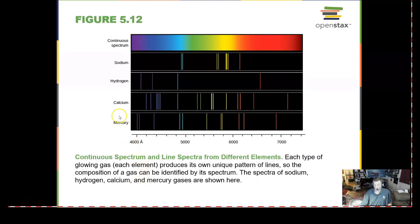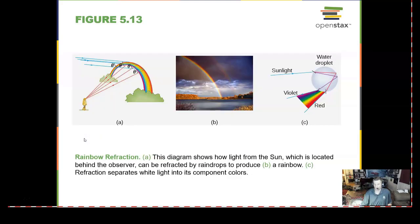Now within dark lines, we can also have emission lines. So the bright lines are called emission lines. A water droplet can act as a prism to create a rainbow.